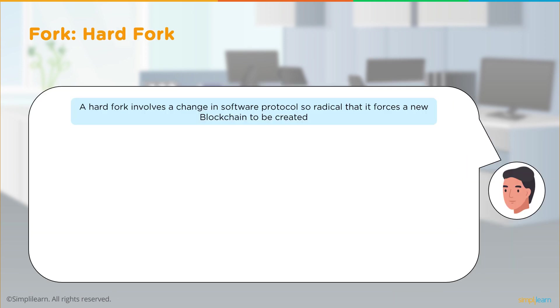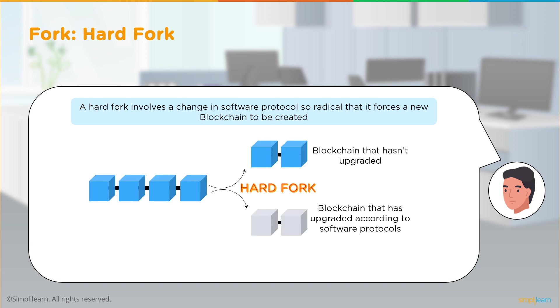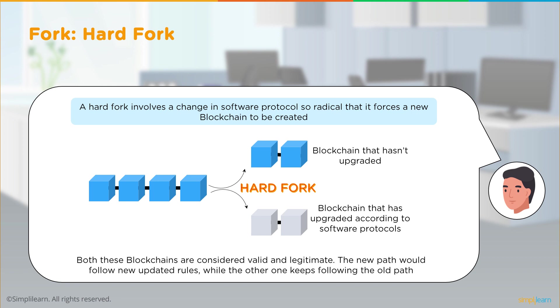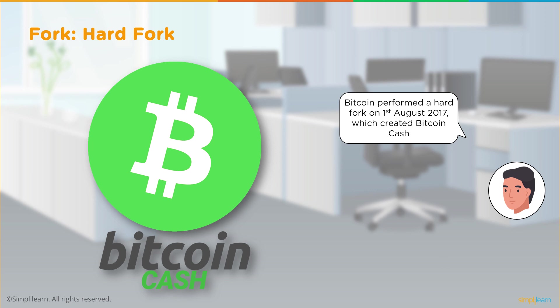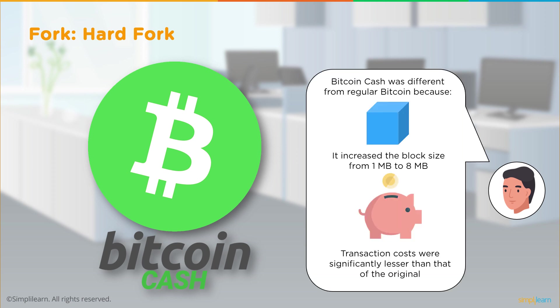A hard fork involves a change in the software protocol so radical that it forces a new blockchain to be created altogether. In a hard fork, there are two versions: one blockchain that hasn't upgraded and one that has — both considered valid and legitimate. The new path follows new updated rules while the old one keeps following the old path and remains in existence. Bitcoin performed a hard fork on 1st August 2017, creating Bitcoin Cash, which increased the block size from 1 MB to 8 MB, significantly reducing transaction costs.